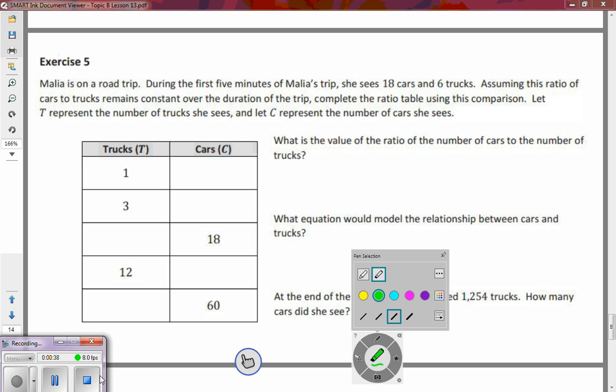We've got 18 cars and six trucks. Assuming this ratio of cars to trucks remains constant over the duration of the trip, complete the ratio table using this comparison. Let T represent the number of trucks that she sees and C represent the number of cars that she sees.